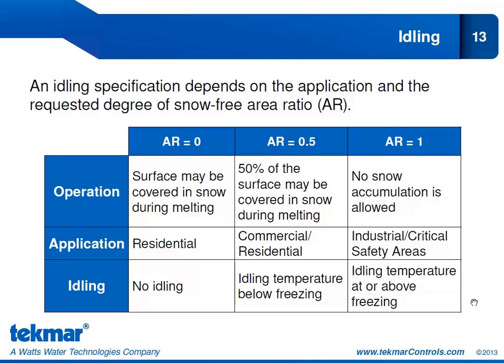The highest level is AR1, which means absolutely no snow accumulation is allowed. This is recommended for hospital emergency entrances, helipads, high-priority aprons, loading areas, runways, and similar areas where it is critical that there is no snow or ice accumulation. In this case, we are melting all snow at maximum snowfall amounts as the snow falls. We would be idling at higher temperatures — probably right around freezing, perhaps 28 to 30 degrees.